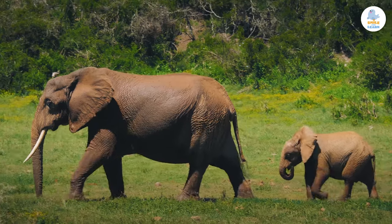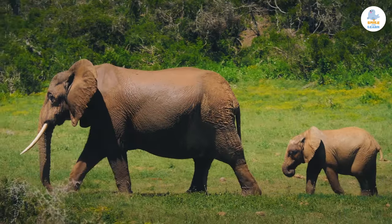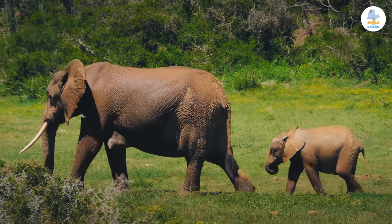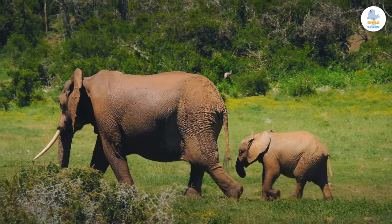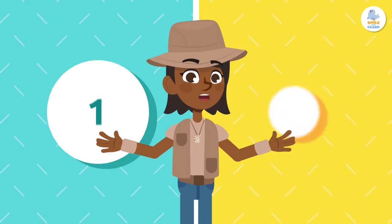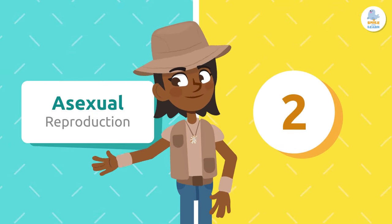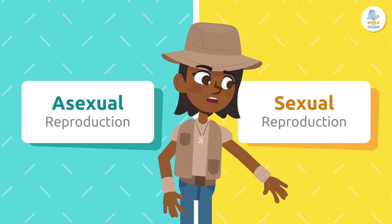As you probably already know, animals have babies similar to themselves through reproduction. There are two types of reproduction: asexual and sexual reproduction.